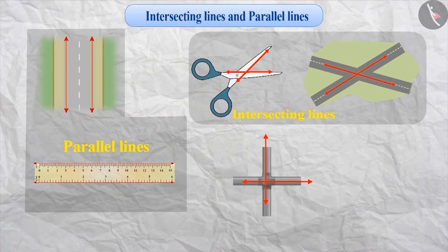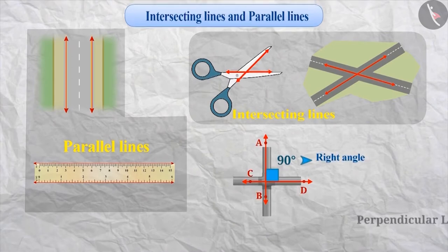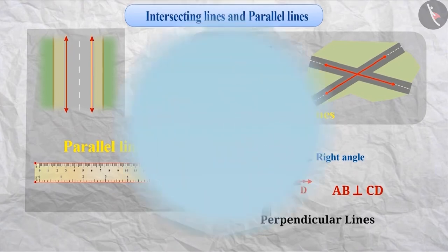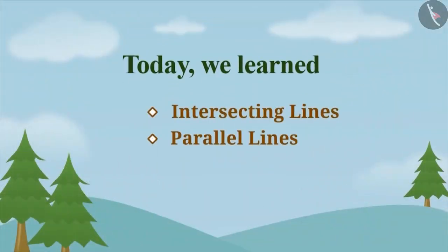Now, let's look at these intersecting lines. These lines make an angle of 90 degrees, that is, a right angle. Such intersecting lines are called perpendicular lines. For instance, here AB is perpendicular to CD and represented like this. Today, we learned about intersecting lines and parallel lines.